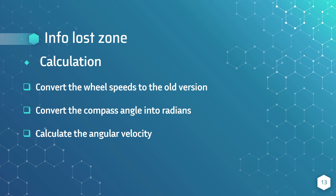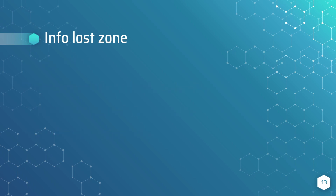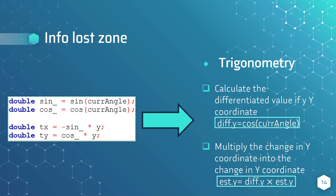Next, I will convert the compass reading into radians as it is in degrees. Using this, I will calculate the angular velocity, which is the current angle minus the previous angle divided by the change in time. Next, using the change in y-coordinate, it is calculated using the cosine of the current angle multiplied by the y-coordinate. Using this value, I will add it to the estimated y-coordinate to obtain a new value. This value helps the robot move around the info-loss zone as it is able to estimate its y-coordinate when it is in the zone.